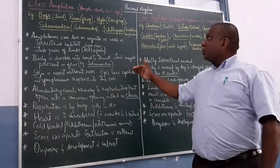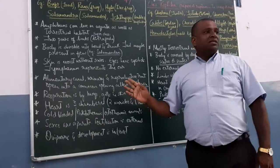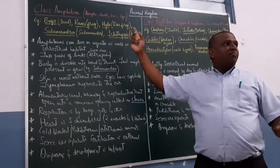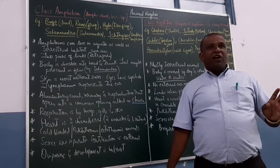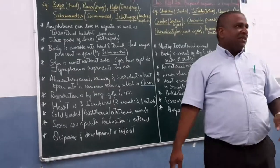So superclass tetrapoda we are going to discuss the first class that is amphibians. Amphibian is a Greek word. Amphib means dual, bios means life. Dual life. So you can find that they are found both in the aquatic as well as terrestrial habitat.